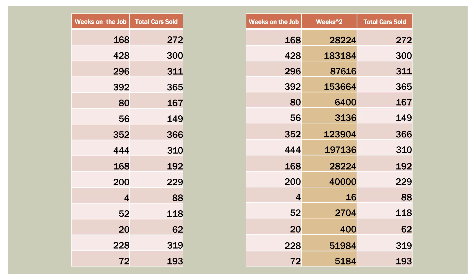Here is our original data. The first salesperson has been there for 168 weeks and has sold 272 cars. You can see the data table on the left, and when we plot that on a scatterplot, you can see that a person who hasn't been there as long is not going to sell as many cars, and as a person is at the car dealership longer, they're going to sell more. We created a quadratic model because it was evident from the scatterplot that the data was not linear — or more accurately, the best way to model this data was with a quadratic model.